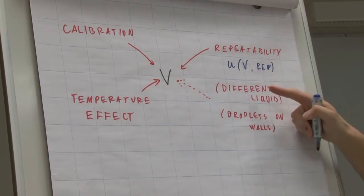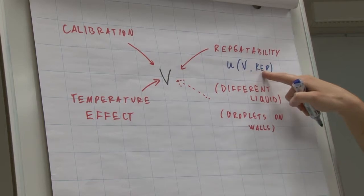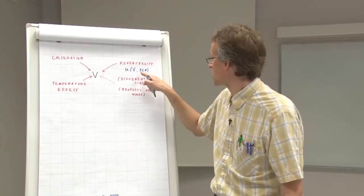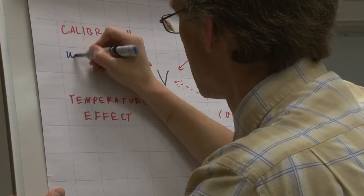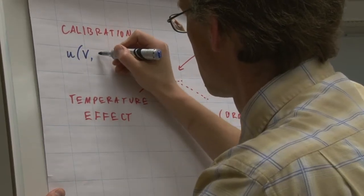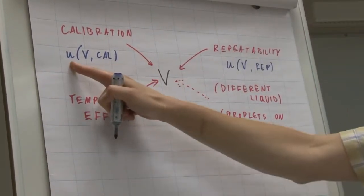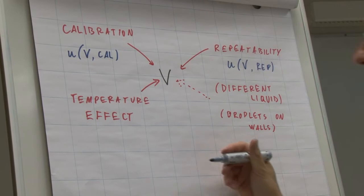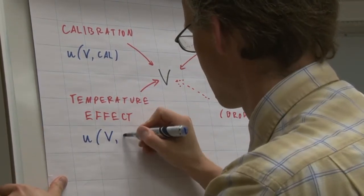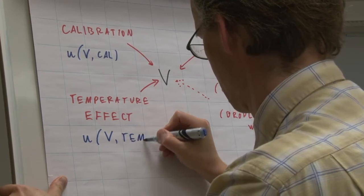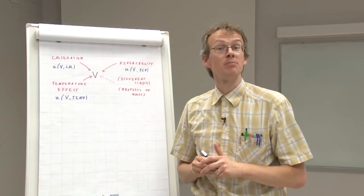So the standard uncertainty of this volume due to repeatability, this is how this uncertainty component reads. Standard uncertainty due to calibration, and standard uncertainty due to the temperature effect.